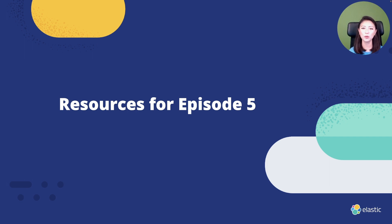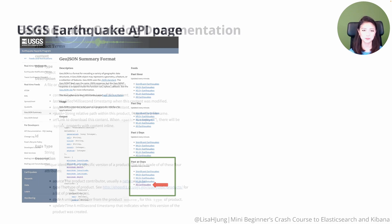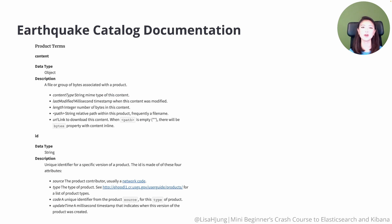So let's talk about the relevant resources for this episode. All the links to these resources are included in the description box. We'll be getting the data from the USGS Earthquakes API page — more specifically, all earthquakes data from the past 30 days, so be sure to have this page pulled up as we're going over it. Next, we have the Earthquake catalog documentation, which contains a description of fields included in the API. If you need clarification on the acronyms or want details about certain fields, use this documentation as your reference.